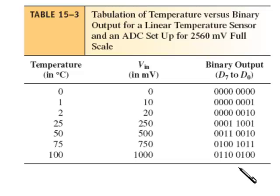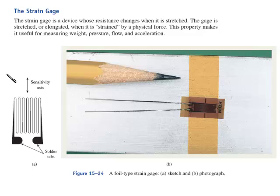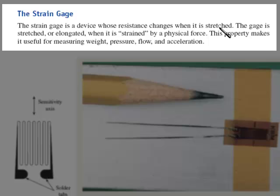And the last analog sensor I want to talk about is the strain gauge. It's a device whose resistance changes when it's stretched. The gauge is stretched or elongated when it is strained by a physical force, usually a weight of some sort. This property makes it useful for measuring weight, pressure, flow, and acceleration.